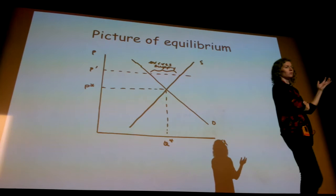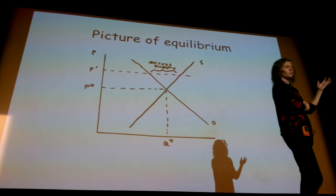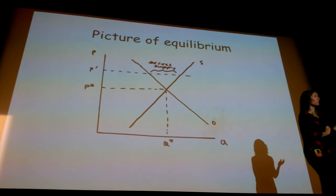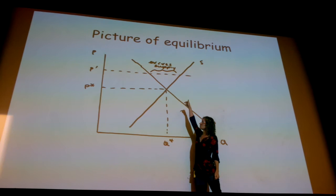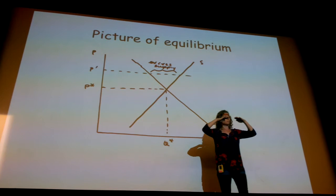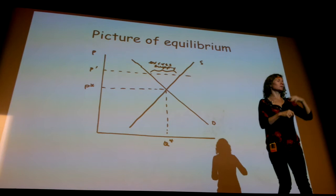Similarly, what happens if we have a price below the equilibrium price? So now what do we have? Now we have that the quantity demanded is greater than the quantity supplied. So this is a situation that I'll call excess demand.